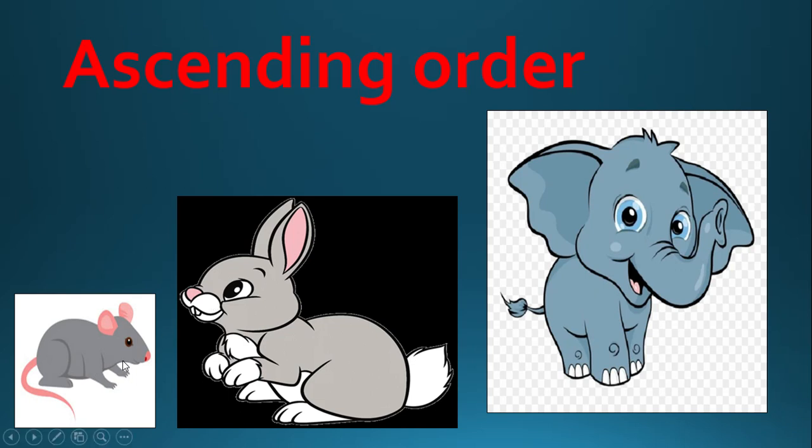Ascending order means smallest to biggest. Who is the smallest animal in this picture? Mouse. Mouse is the smallest animal. Who is the biggest or largest animal in the picture? Elephant. Elephant is the largest or biggest animal.